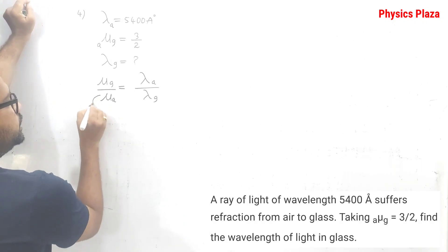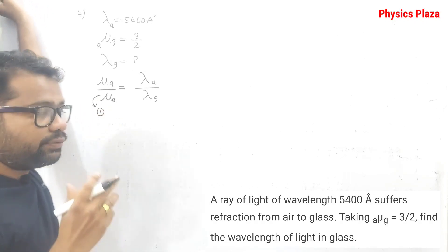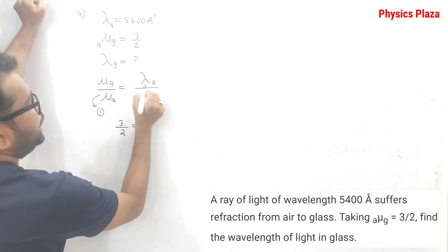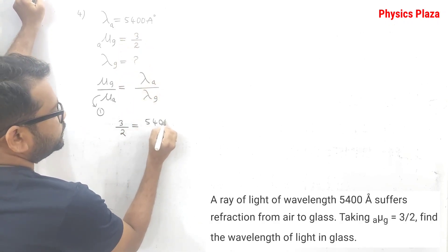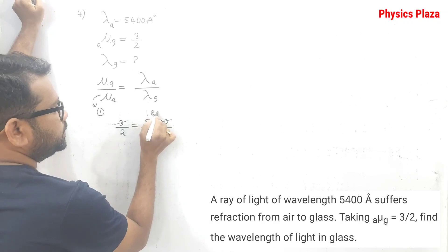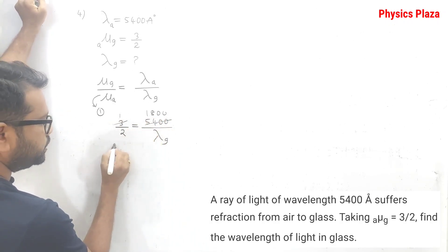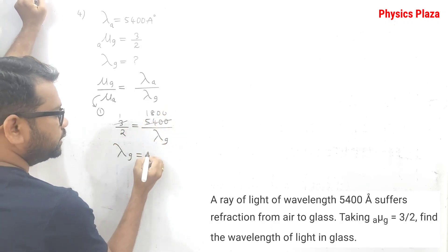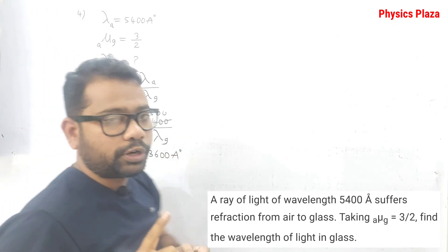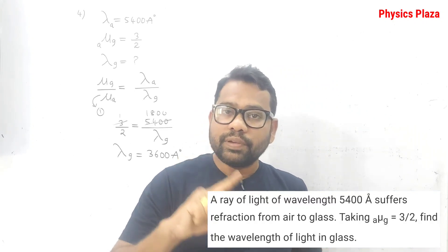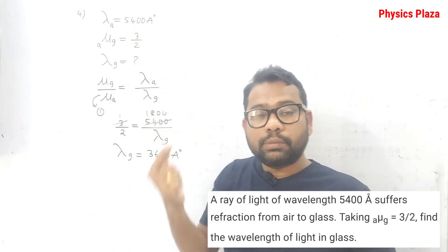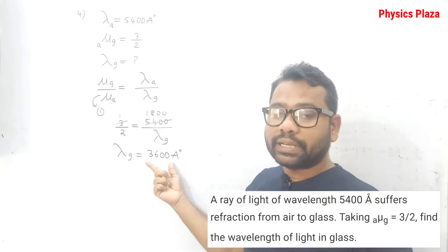Since μ_air = 1, we have 3/2 = 5400/λ_glass. Cross-multiplying: λ_glass = 2 × 1800 = 3600 angstroms. From this we learn an important point: during refraction, wavelength changes. When light enters glass from air, its wavelength decreases because the refractive index increases. Frequency remains constant but wavelength decreases.